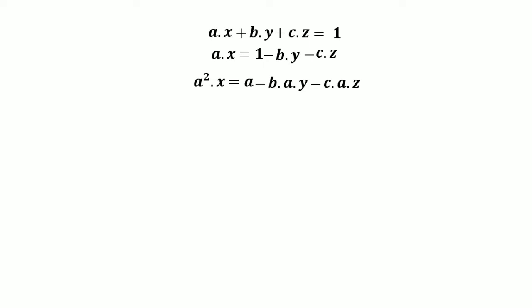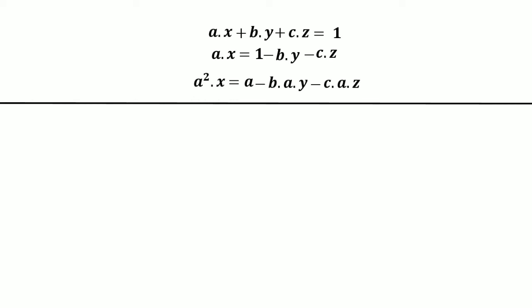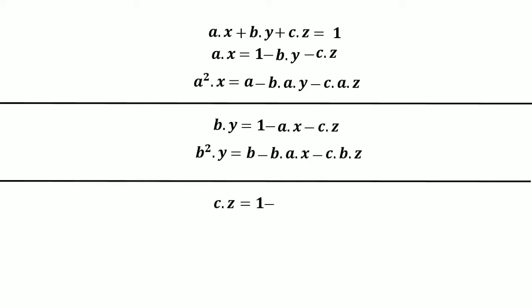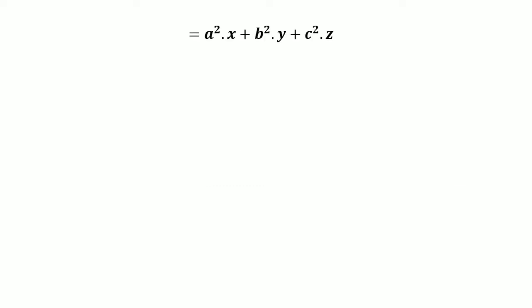Using the same method, we find b squared times y: b times y equals b minus ab·x minus cb·z, so b squared times y equals b minus ab·x minus cb·z. Similarly, by the same method, we find the value of c squared times z.